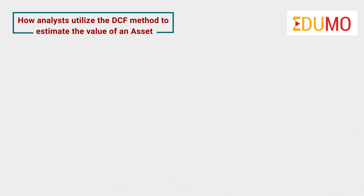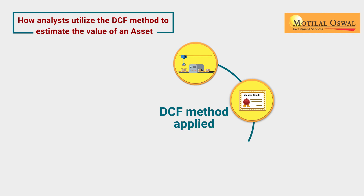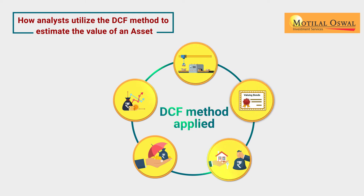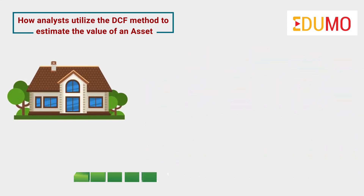The DCF method can be applied to a number of things like purchasing machinery or business equipment, valuing bonds, purchasing real estate properties, investing in insurance or annuities, and investing in shares of a company. Bear in mind, such valuation only works for assets that have the potential to generate future cash flows, and the asset needs to generate at least a positive cash flow once in the future.